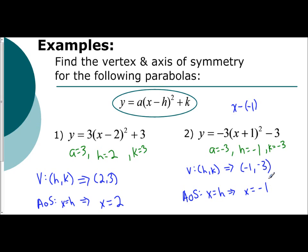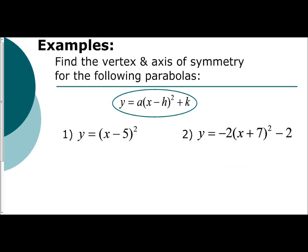Once you get a quadratic equation in vertex form, it's very easy to identify a, h, and k, and then use them to find the vertex and the axis of symmetry. Now these next two examples we'll go through as well. We have x minus 5, the quantity squared. We need to identify a, h, and k.